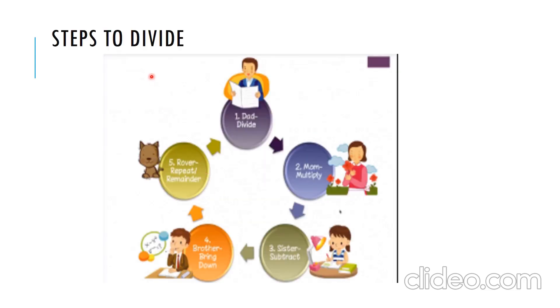Now, these are the few steps we are supposed to follow while dividing the sum. The first one is divide. That means, for example, if you are dividing 25 by 5, 25 by 5. Multiply. That means 5, 5 is 25. Then subtract. That is 25 minus 25. Then, bring down. Then, reminder.